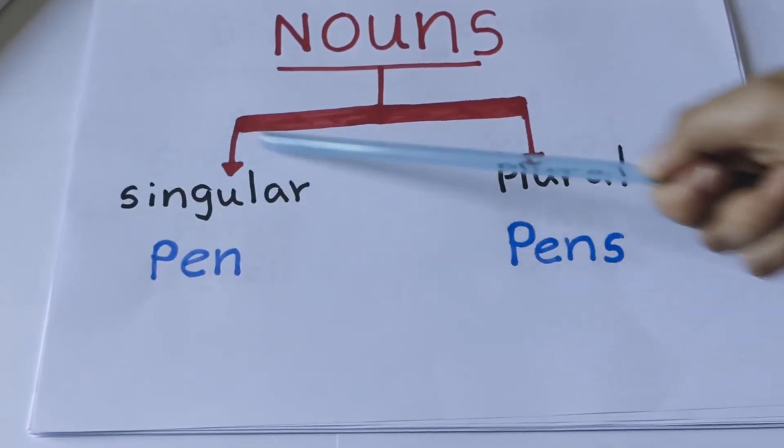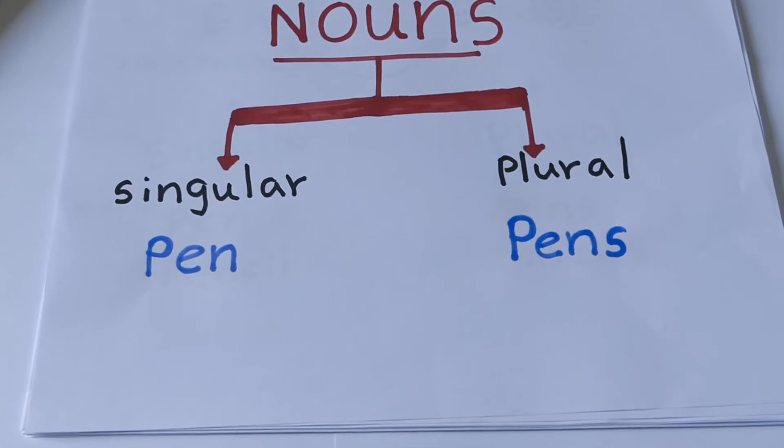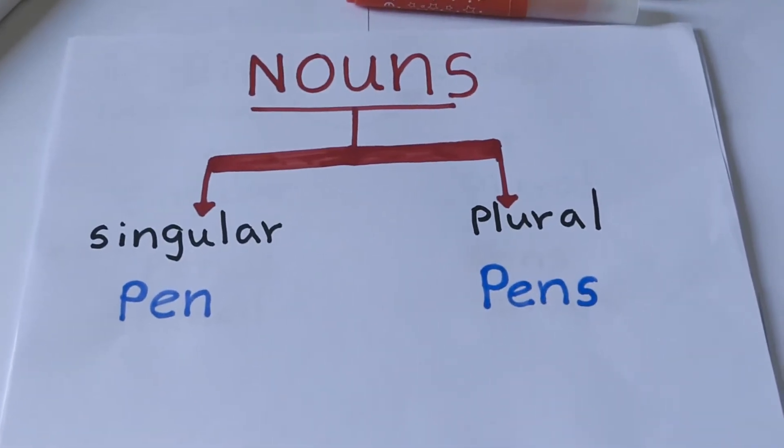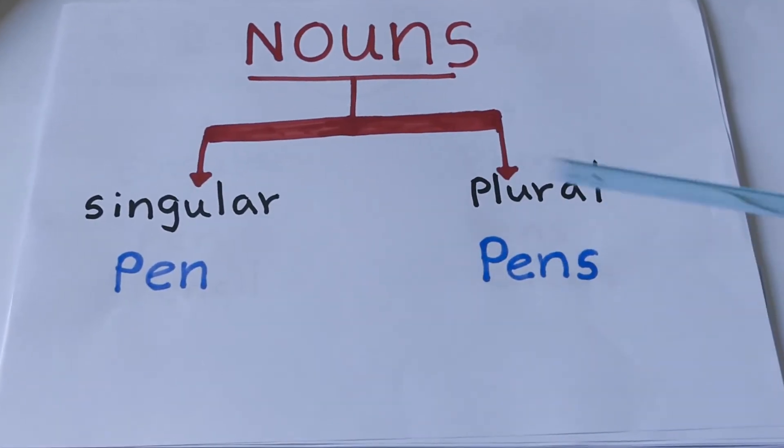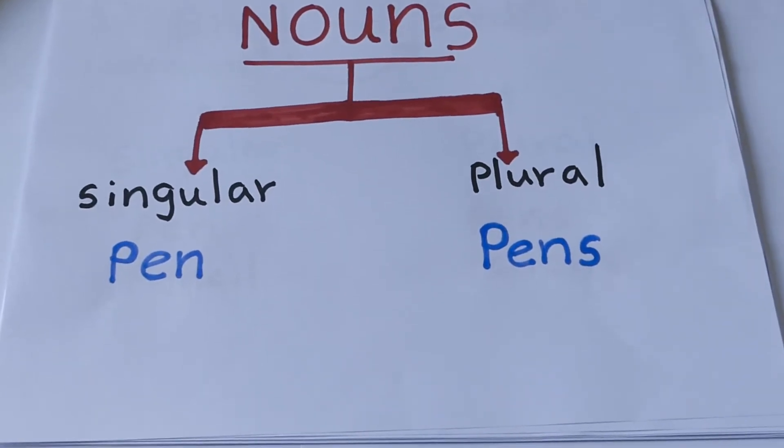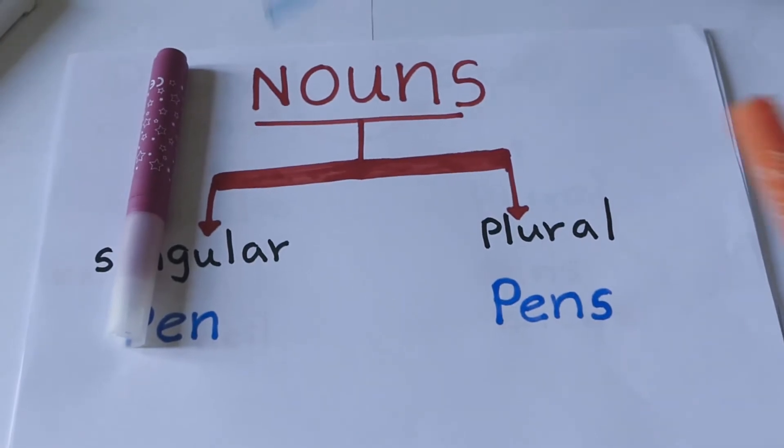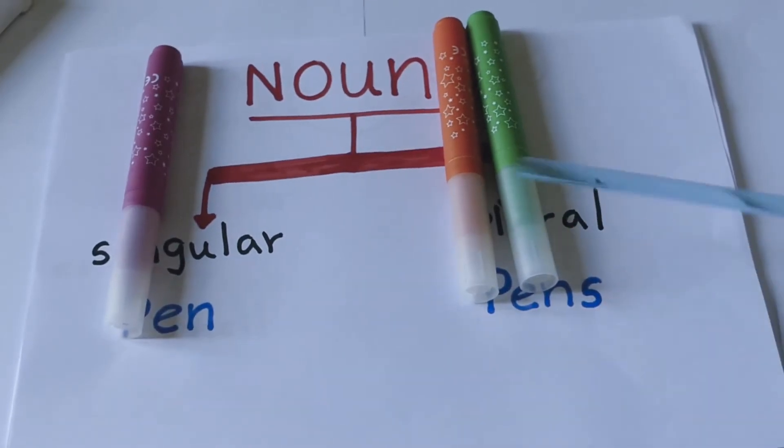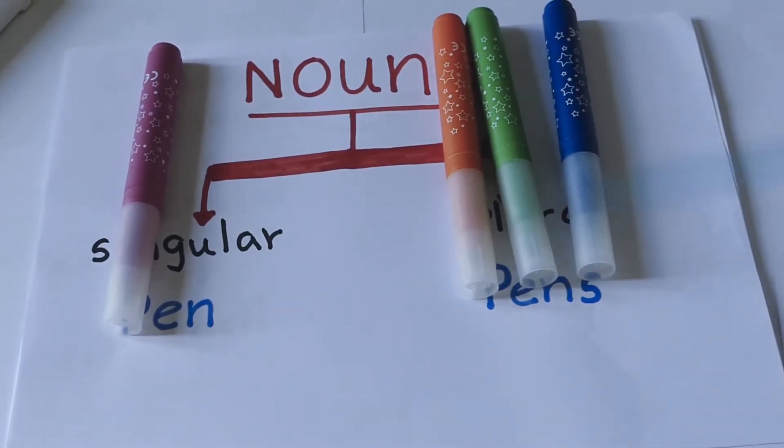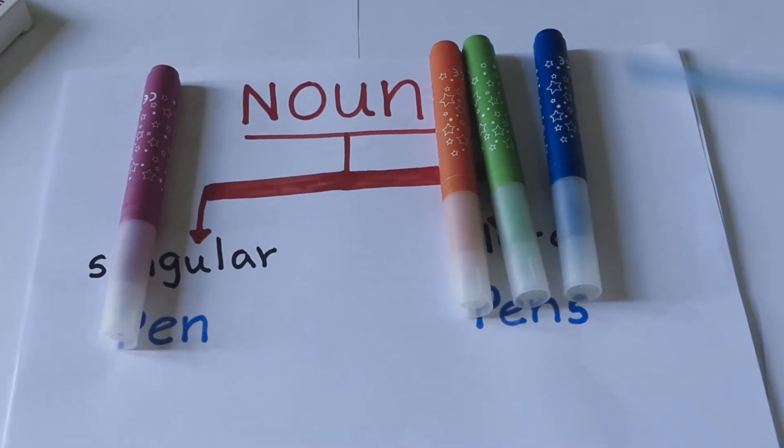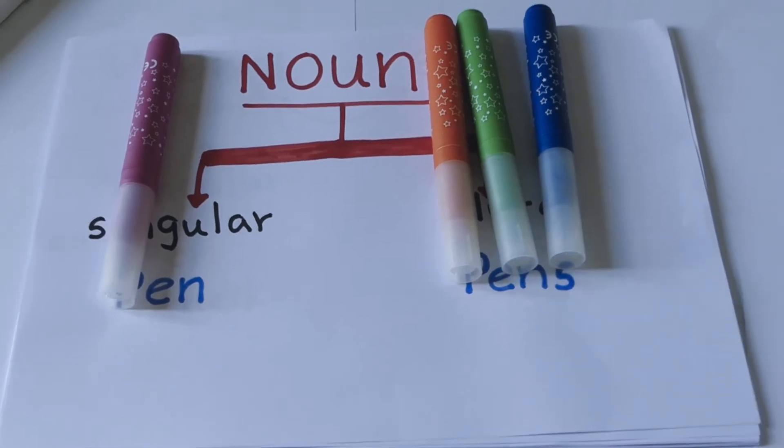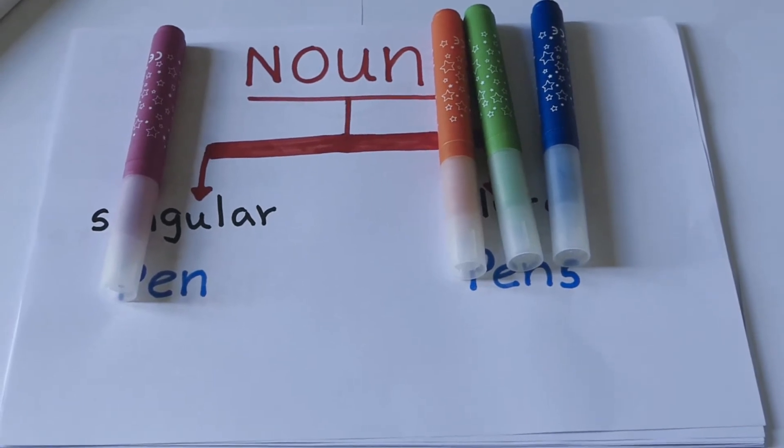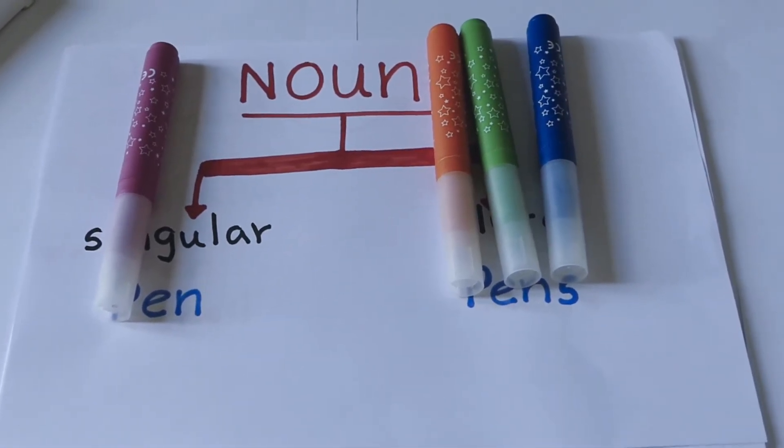What is the meaning of singular? Singular is one. Plural means more than one, like two, three, four. In example, pen, pens. One pen, pens - one, more than one, one, two, three. Pen, pens, more than one. We consider it plural. Let's see what are the rules to convert singular to plural.